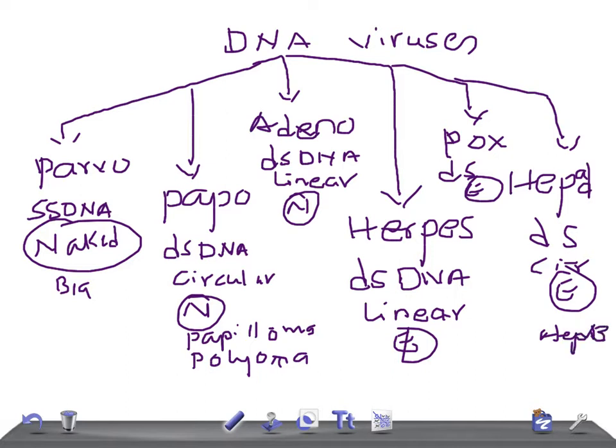Hepatitis B is the only hepatitis virus that is a DNA virus. Regarding virion-associated polymerase: only two viruses have it — Pox and Hepadna.